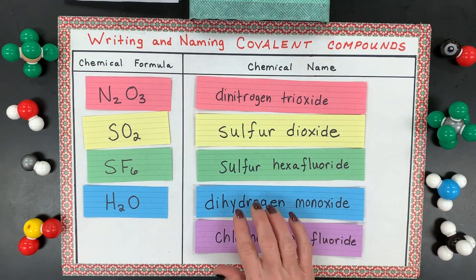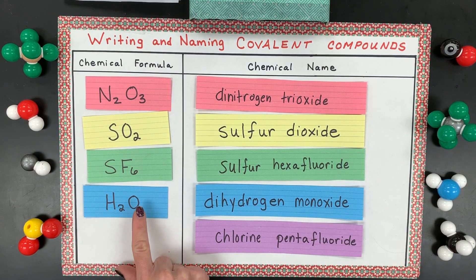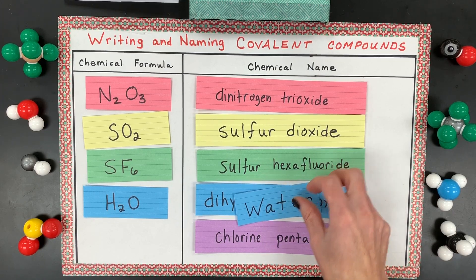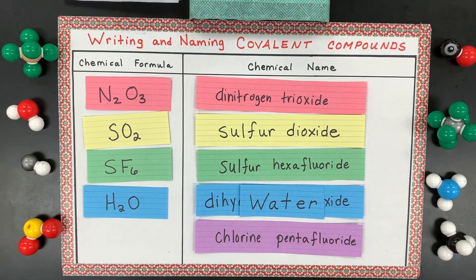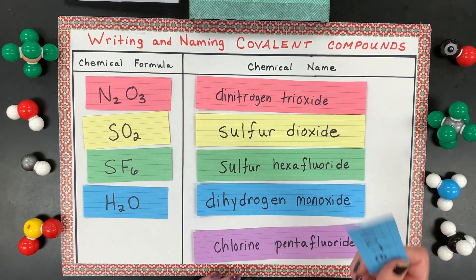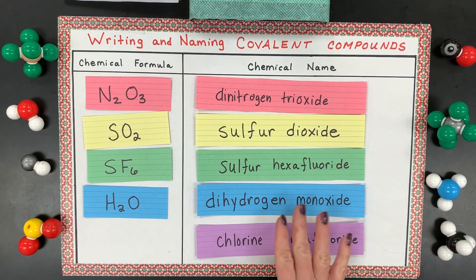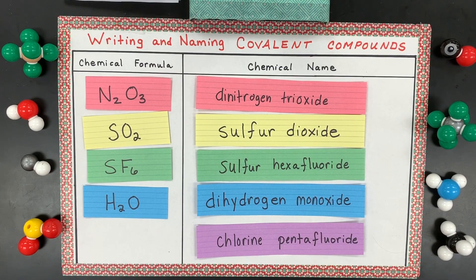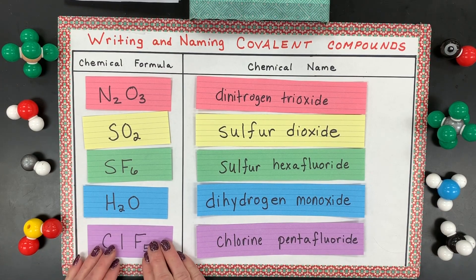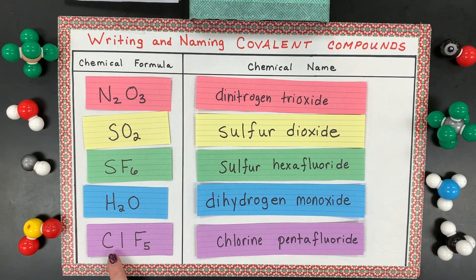Next is dihydrogen monoxide — you might say, wait, isn't that water? You're right, that is water. It has a common name, but the appropriate name using covalent naming rules is dihydrogen monoxide. Last on this list is chlorine pentafluoride: 'penta' means five, so chlorine with five fluorides.